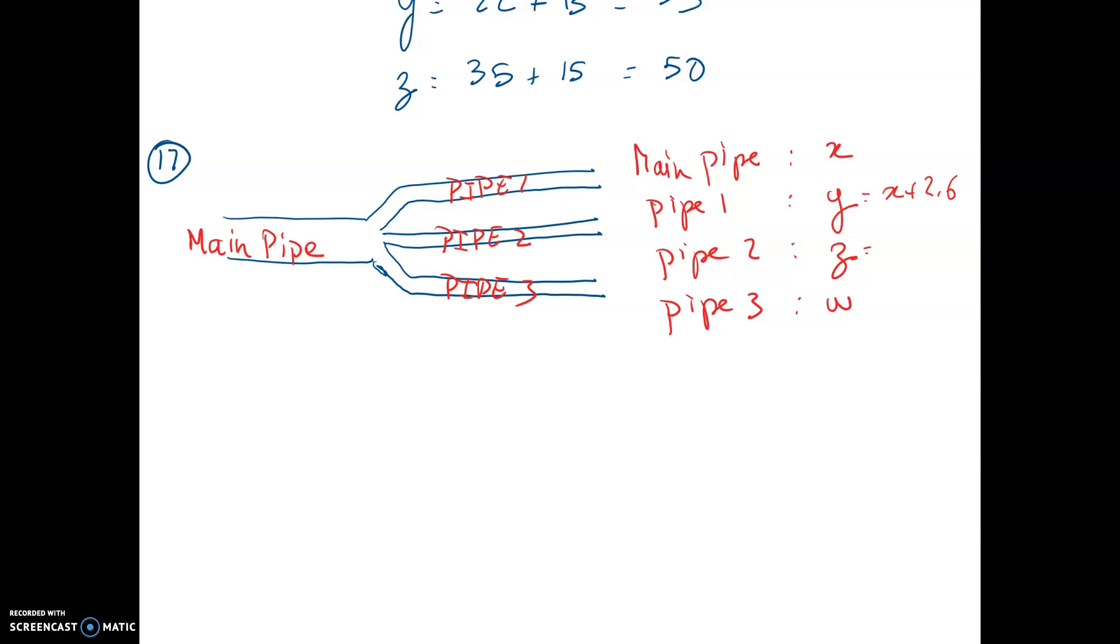Same thing for the pipeline number two, X plus 2.6. And same thing for the pipeline number three, X plus 2.6. They are also saying that the length of the main pipeline plus Y plus Z plus W is equal to 35.4.